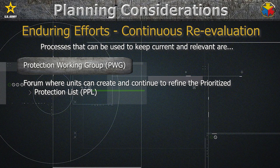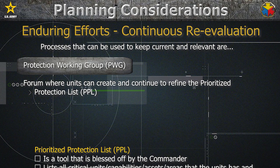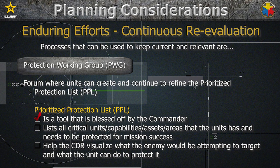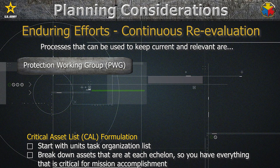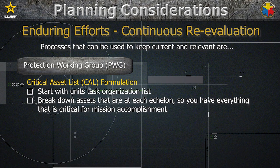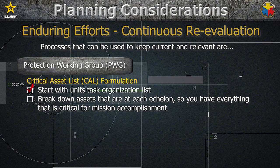The Protection Working Group, or PWG, is a forum where units can create and continue to refine the Prioritized Protection List. The PPL is a tool, ultimately approved by the commander, that lists all critical units, capabilities, assets, and areas that the unit has and needs protected for mission success. The PPL helps the commander visualize what the enemy would be attempting to target and what the unit can do to protect it. As part of the PPL, we'll need to create the Critical Asset List. We'll start by pulling up your unit's task organization.